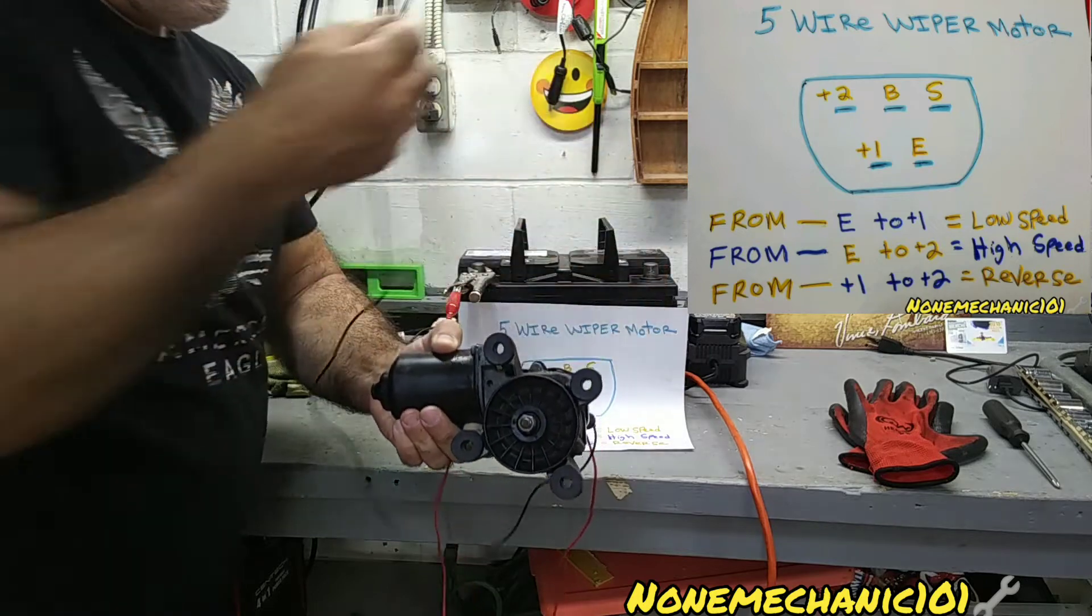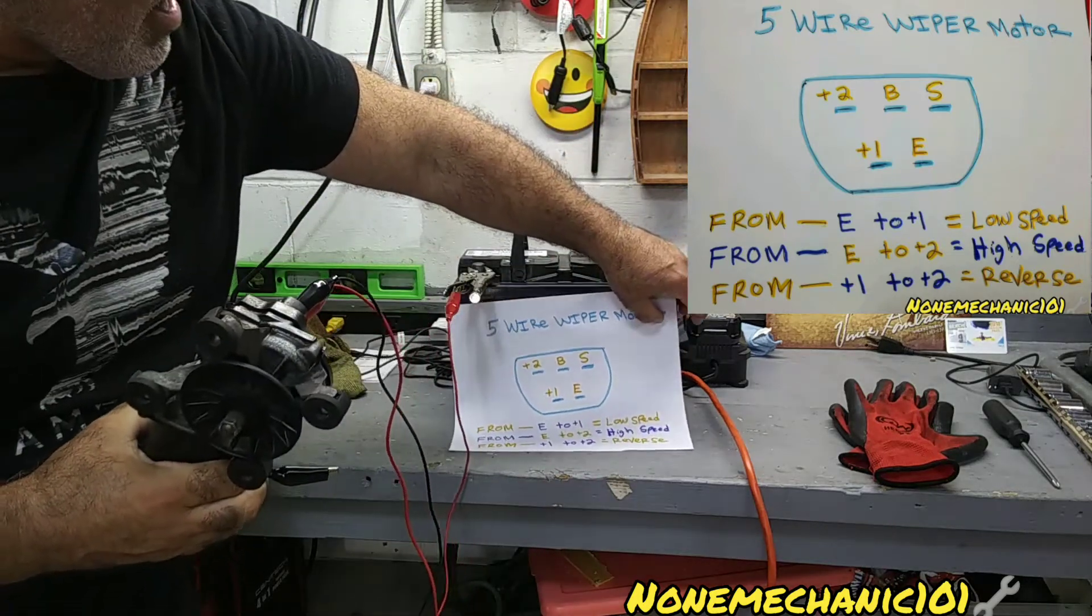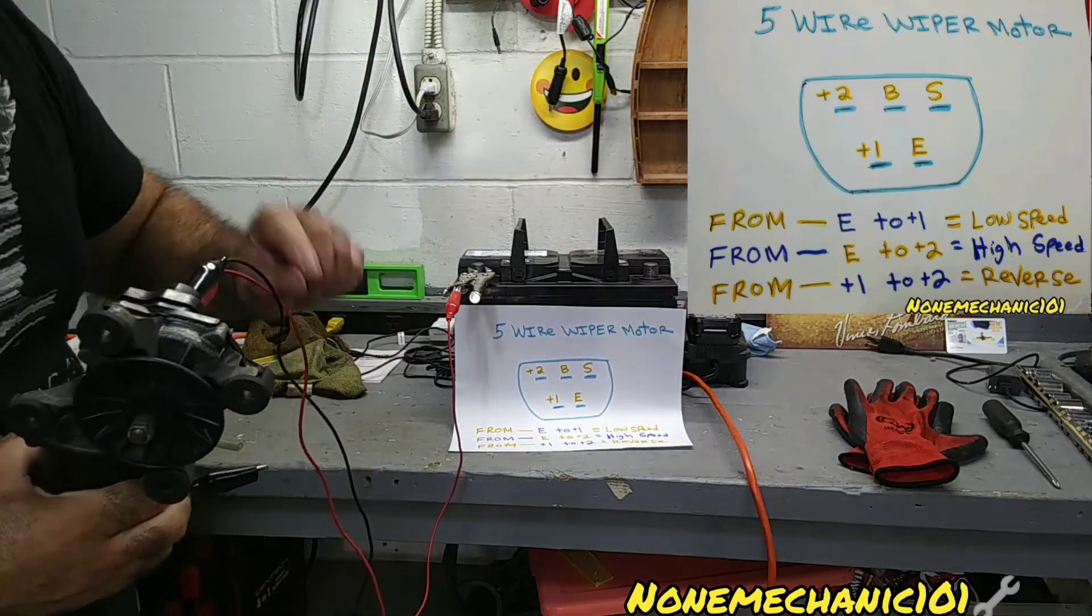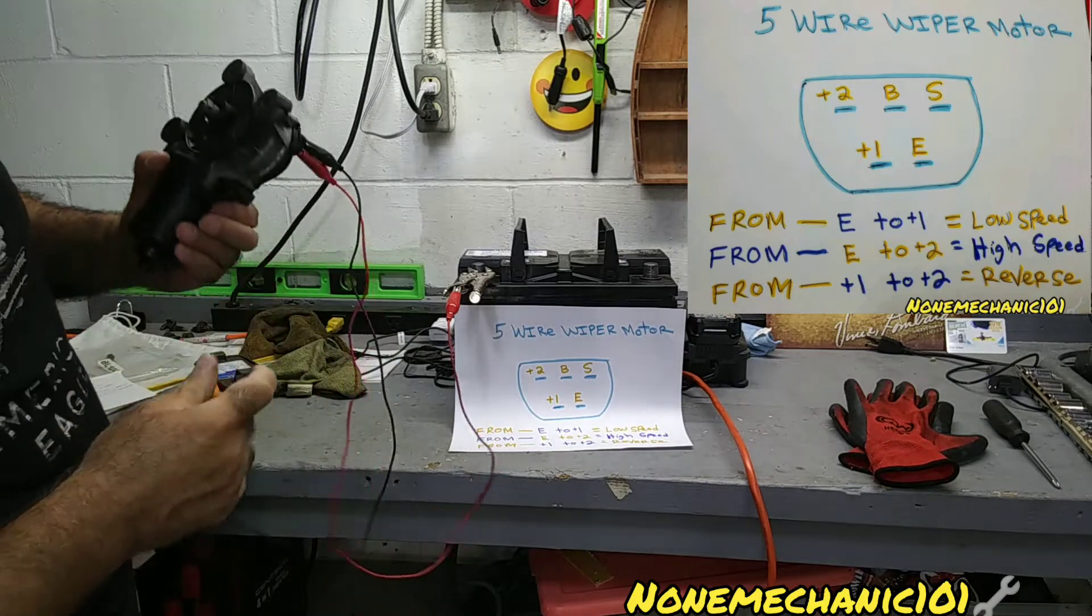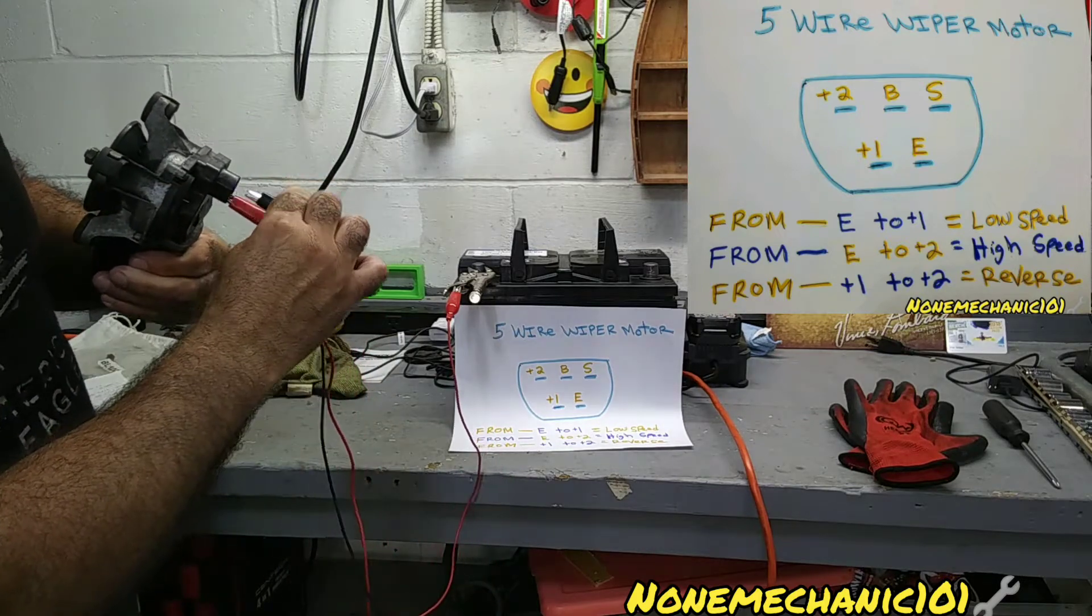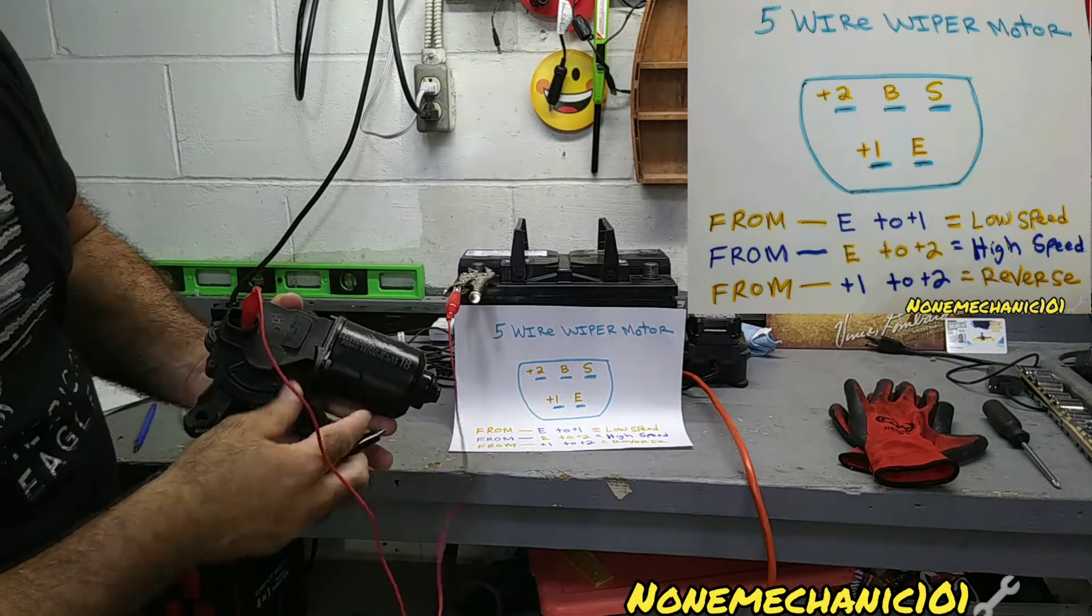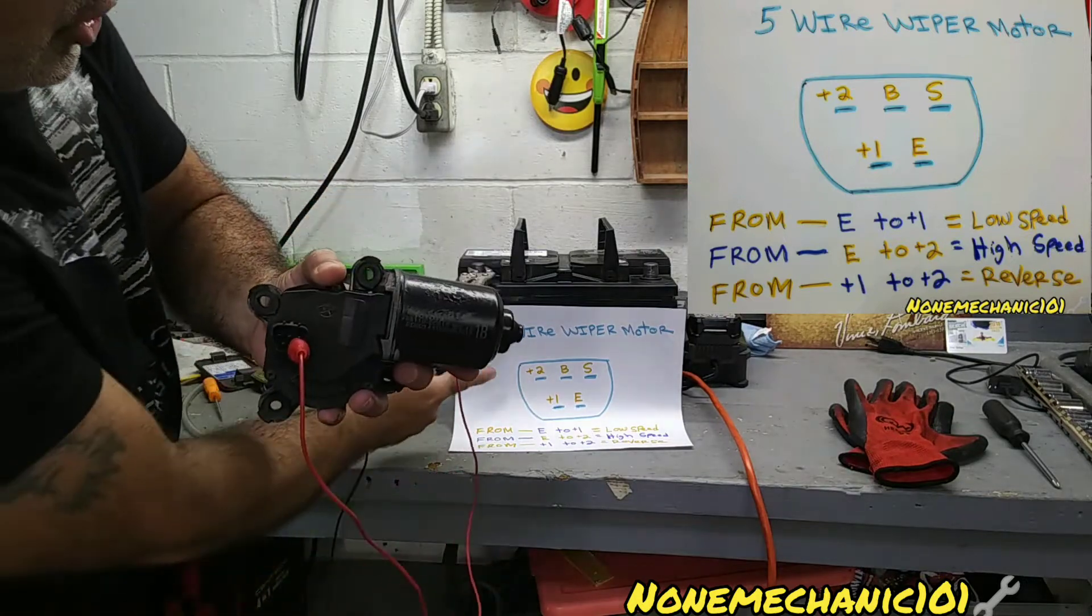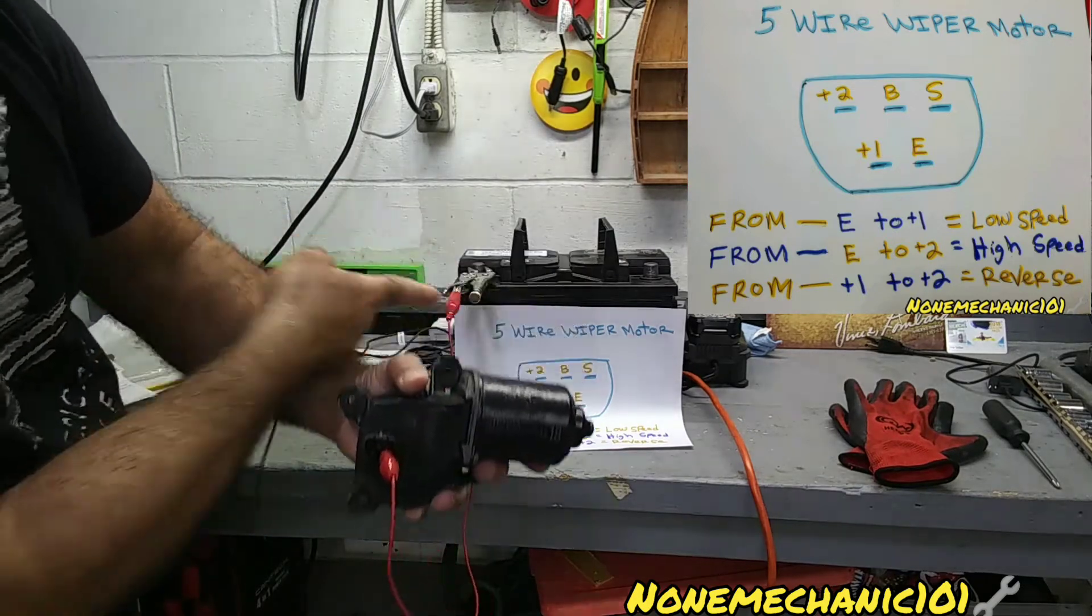Now we're going to do high speed. High speed is from E to +2. So the red one is already at E, so we're going to take the black one and go to +2. That's right in the top in the corner as you see. You put it in the middle piece in there.